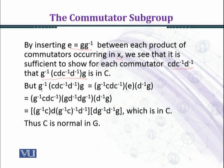But g^-1(cdc^-1d^-1)g = (g^-1cdc^-1)(e)(d^-1g). We replaced e by d^-1g, and d^-1g times d^-1 is the identity element, so e replaced d^-1d.